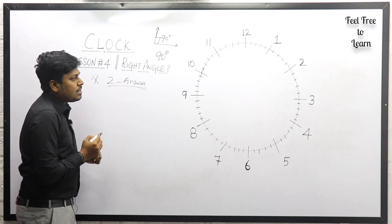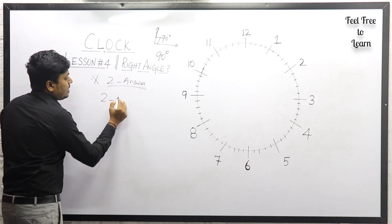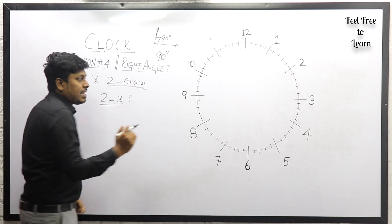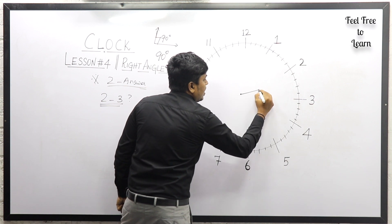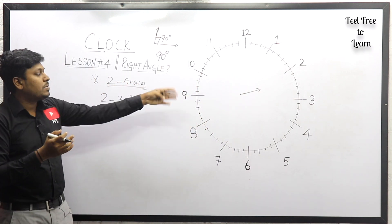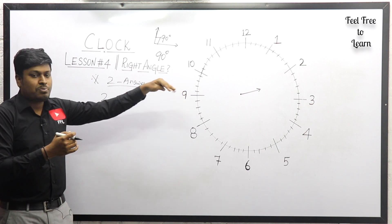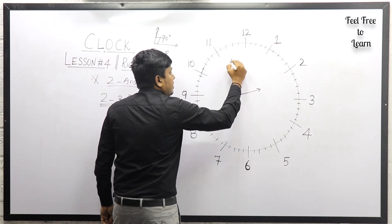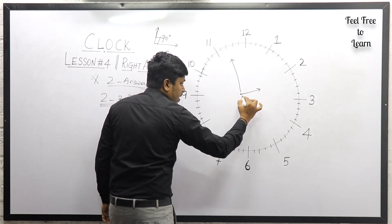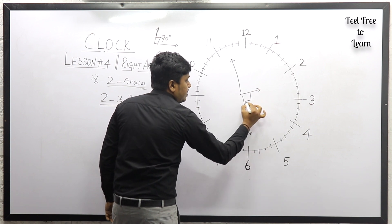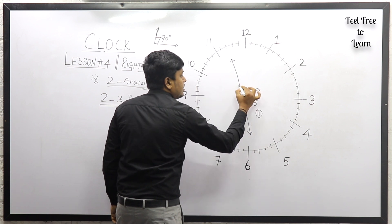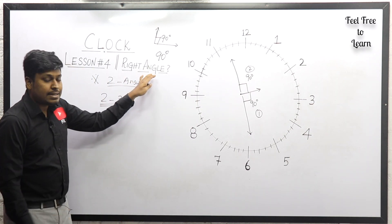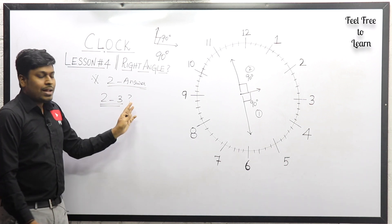For example, between two to three, they ask at which minute both hands be at right angle. Draw the hour hand between two and three. There are two possibilities: one where the angle is 90 degrees on one side, and another where the angle is 90 degrees on the other side. So we get two possible answers — answer number one and answer number two.